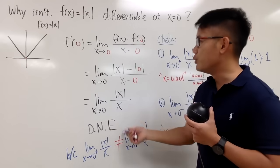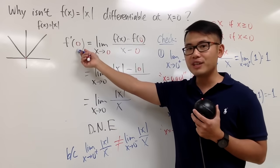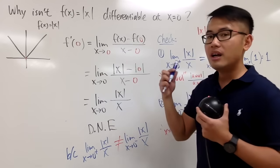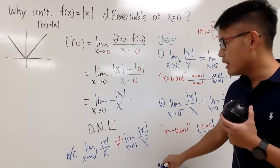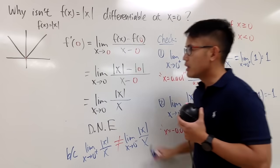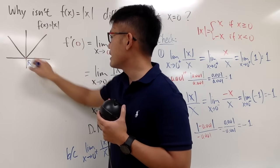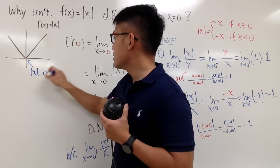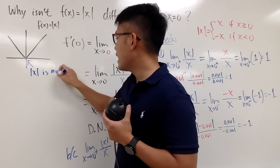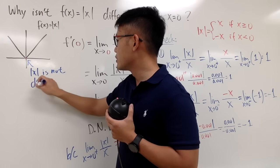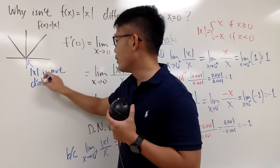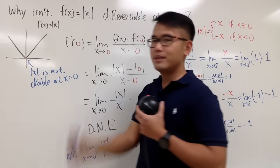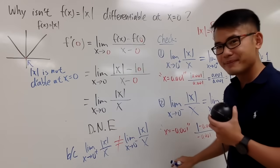This limit represents precisely the derivative. And when there's no derivative, the conclusion is that absolute value of x is not differentiable at x equal to 0.